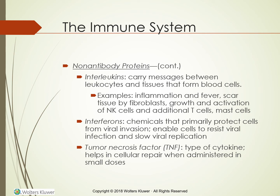Pharmacologic consideration: manufactured interleukins are being used and studied for some types of cancer, autoimmune, and immunity disorders. Proleukin is a manufactured interleukin currently used to treat malignant melanoma and metastatic renal tumors. Interferons are chemicals that primarily protect cells from viral invasion — they enable cells to resist viral infection and slow viral replication, and have been used as adjunctive therapy in the treatment of AIDS. Interferons have also been used to treat some forms of cancer such as leukemia because they stimulate NK cell activity. Interferon is administered parenterally because digestive enzymes destroy its protein structure.